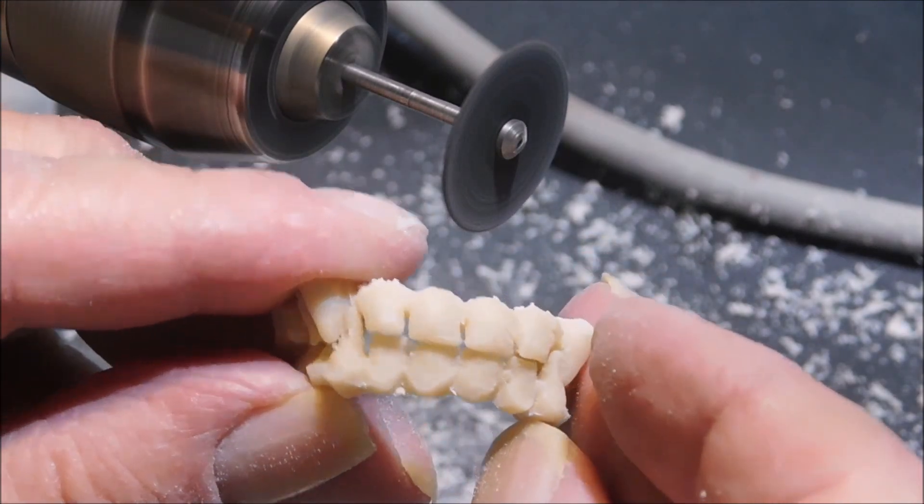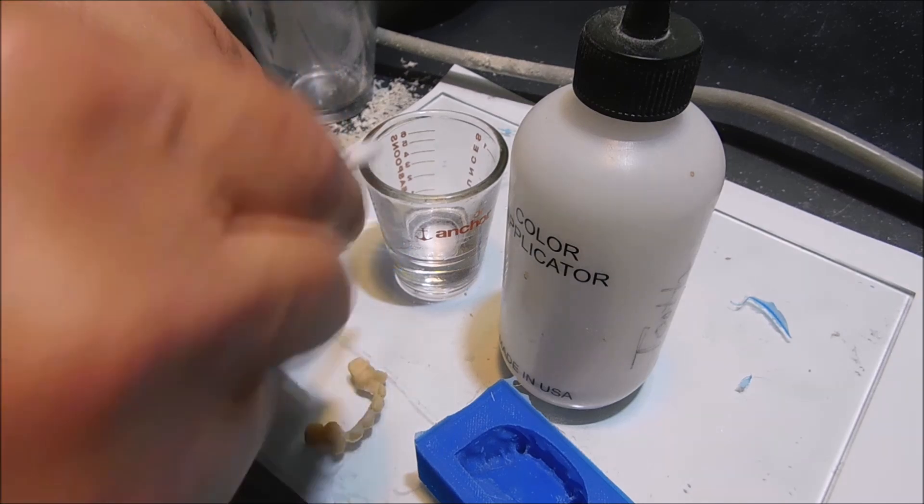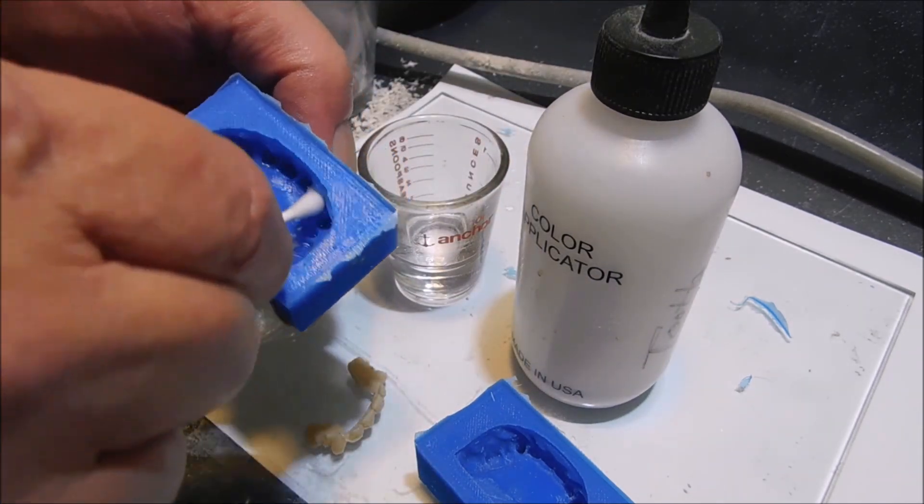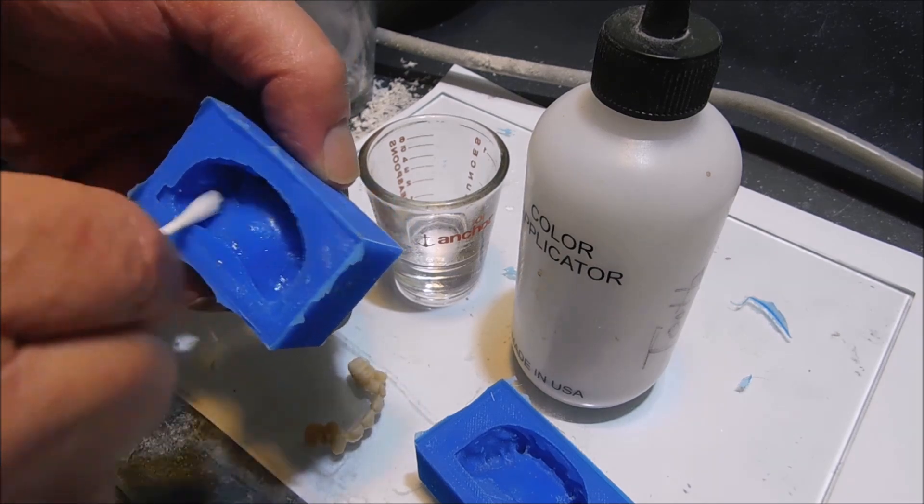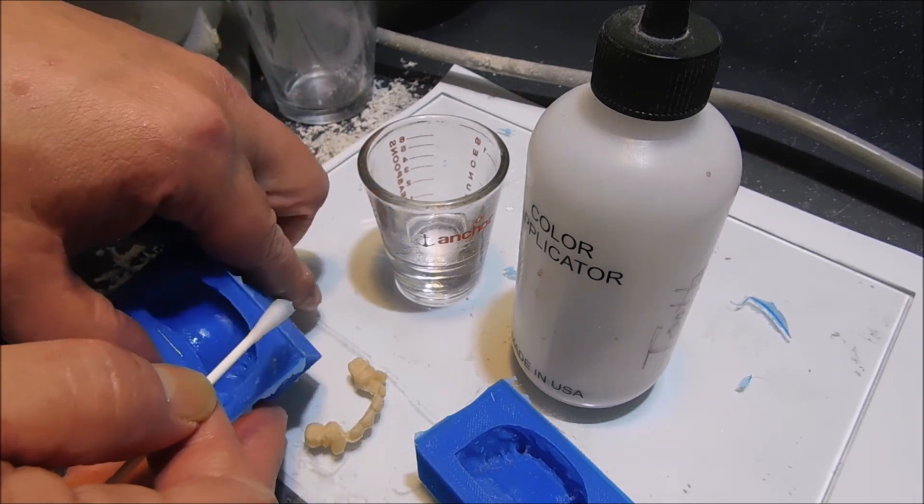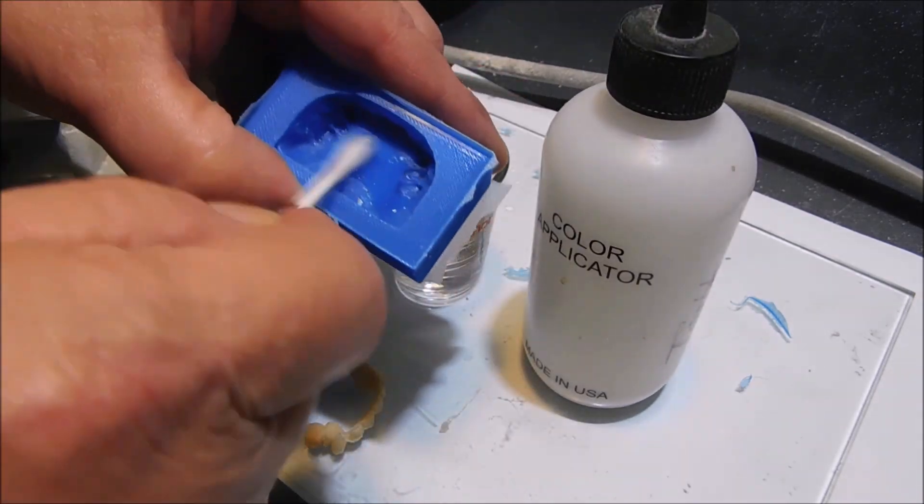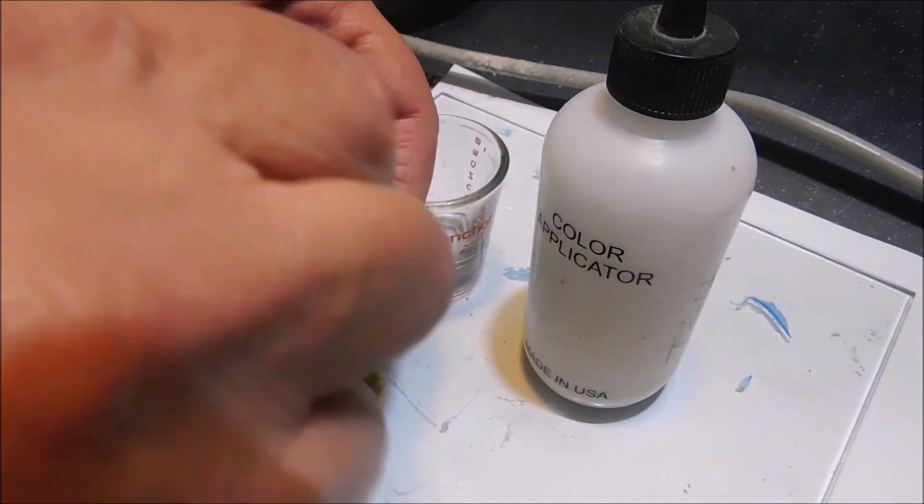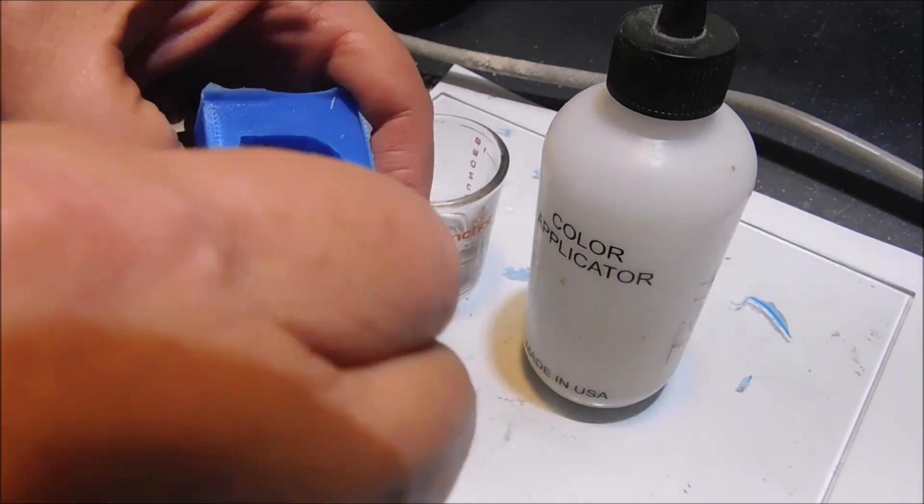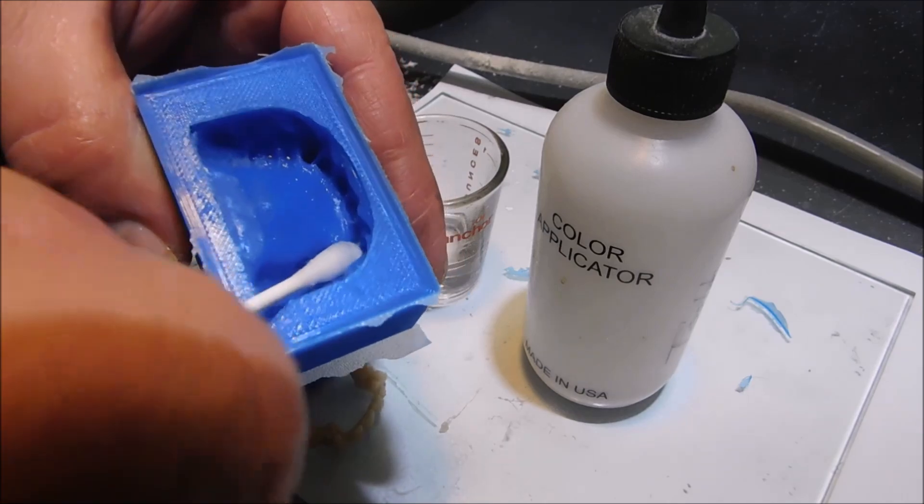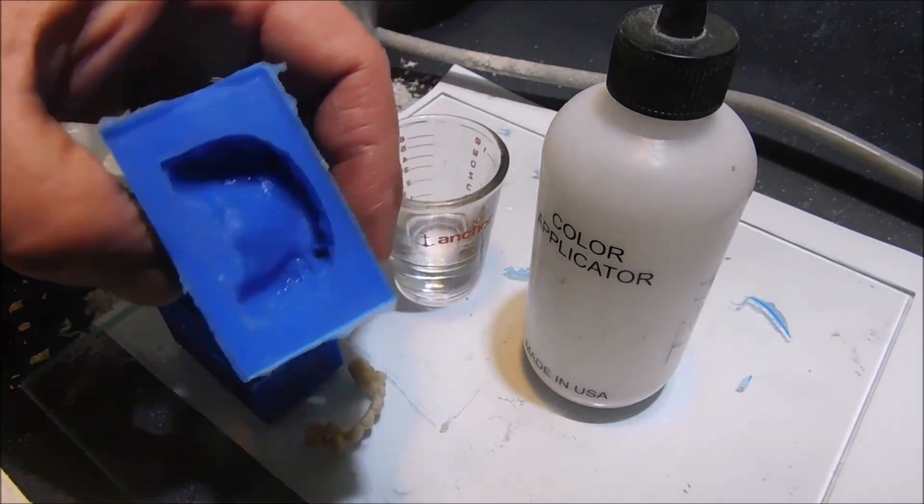I made what we call rebases where I replaced the pink gingiva of the patient's denture with new pink. That's a process of making a mold and putting a putty matrix on their whole denture. When I made the mold, I just removed the whole denture, removed all the pink, and replaced it with new pink.